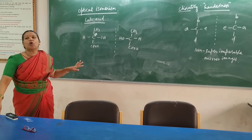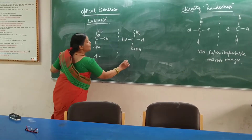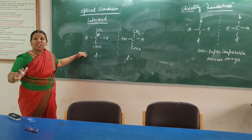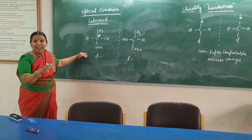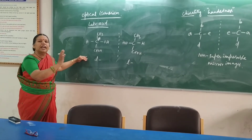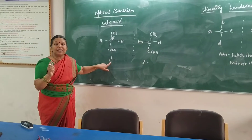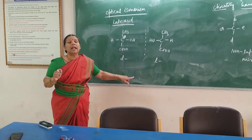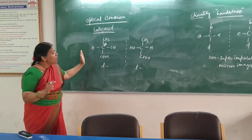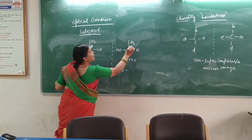If it rotates to the left, we are going to call it levorotatory. One they are going to call D, the other one L. On the board I can distinguish which one is D and which one is L, but only by doing the experiment can I distinguish whether it is D or L. Small d represents dextrorotatory; small l represents levorotatory.